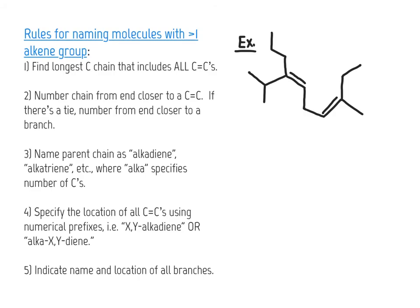Let's go through the guidelines for naming molecules with multiple alkene groups and work through an example problem. You'll see many parallels with naming single-alkene molecules. The main difference is the parent name and the requirement that the longest carbon chain must include all of the carbons of every carbon-carbon double bond. So the first step is to find the longest carbon chain that includes all alkene groups. In this molecule there are two alkene groups, and tracing the longest chain that incorporates both of them gives us our parent chain.